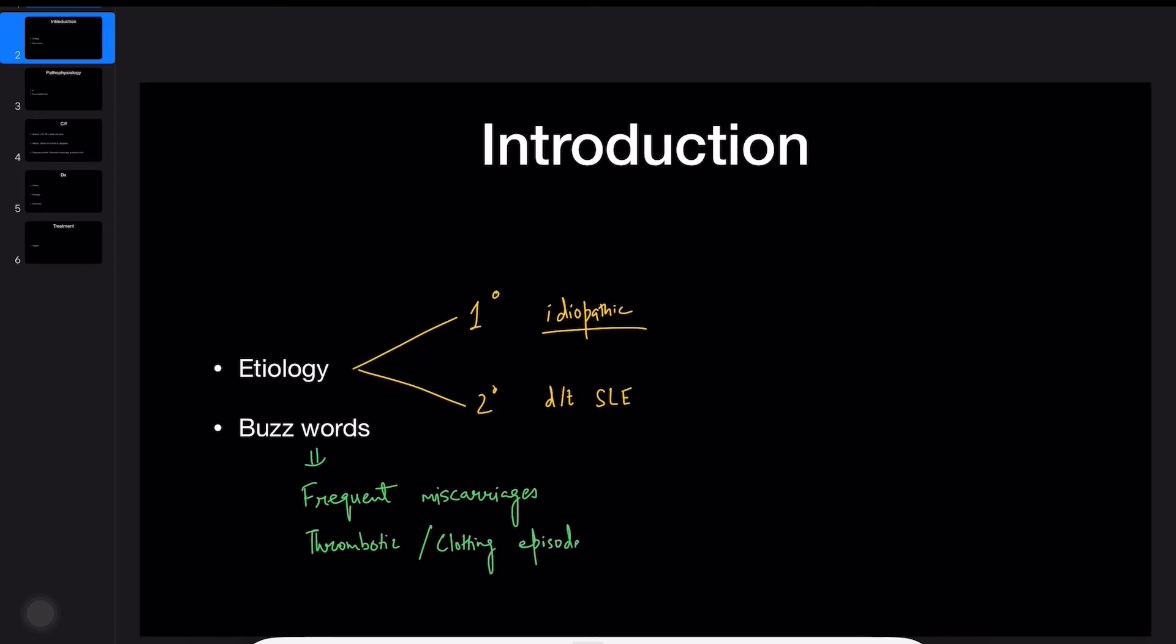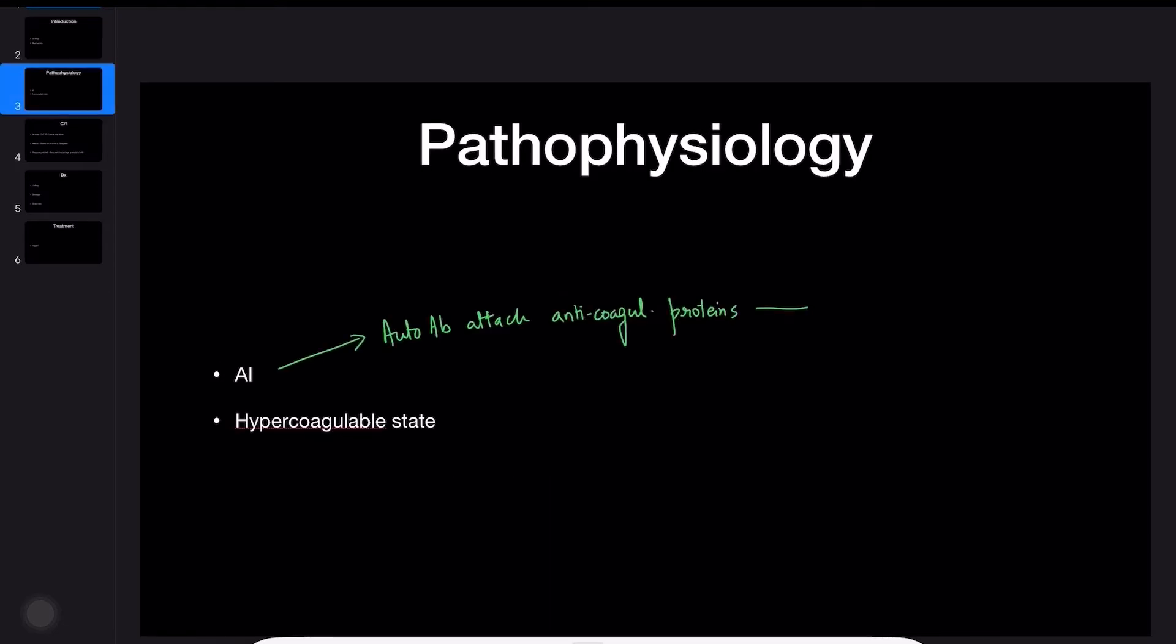As the name suggests, autoantibodies are formed which deactivate anticoagulatory proteins and activate platelets, thus producing a hypercoagulable state. How this happens is still not known.